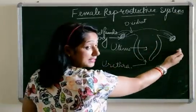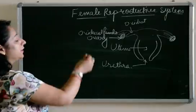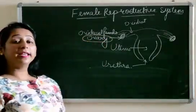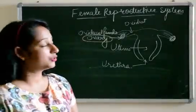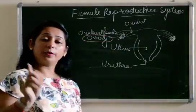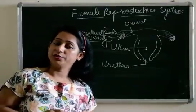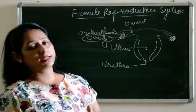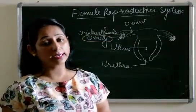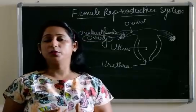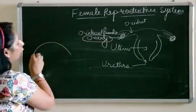Starting off with the parts and their explanation. The first part is the ovary. It is a very important part of the female reproductive system because it performs two functions: one is the formation of ova, and the second is the release of the hormones progesterone and oestrogen. These are the two female reproductive hormones, which are very important for secondary sexual characters and for the proper functioning of the female reproductive system.